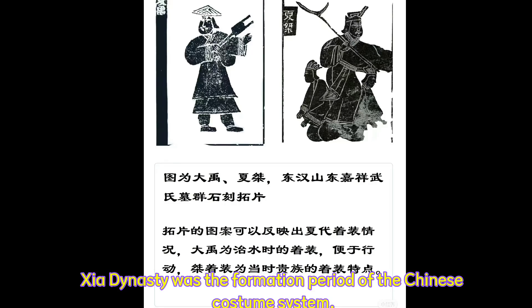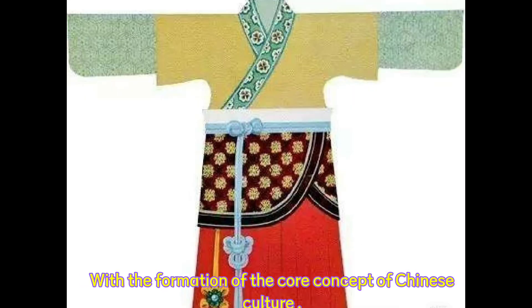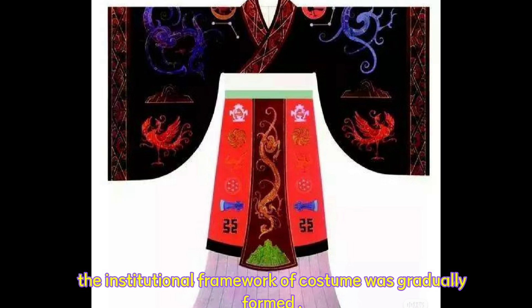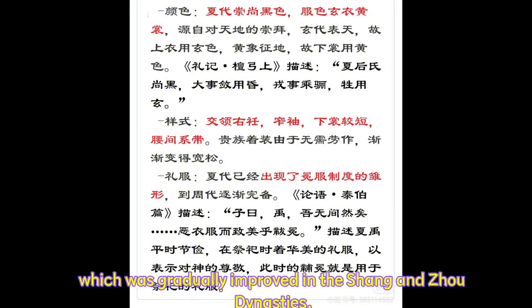The Xia dynasty was the formation period of the Chinese costume system, with the formation of the core concept of Chinese culture. The institutional framework of costumes was gradually formed, which was gradually improved in the Shang and Zhou dynasties.